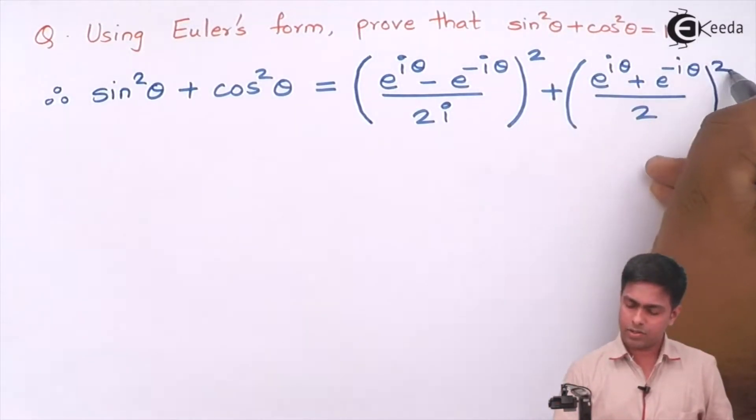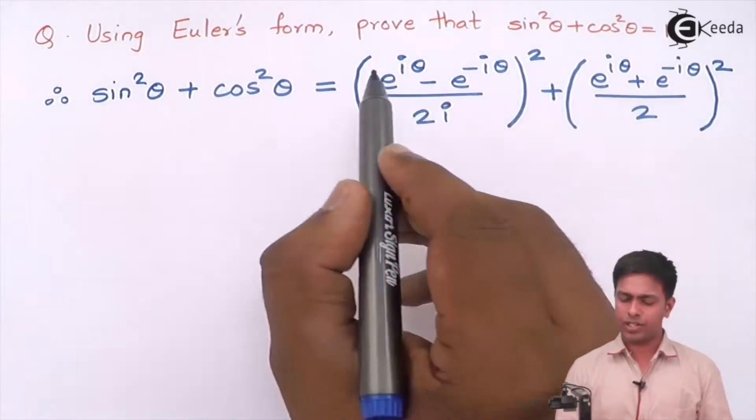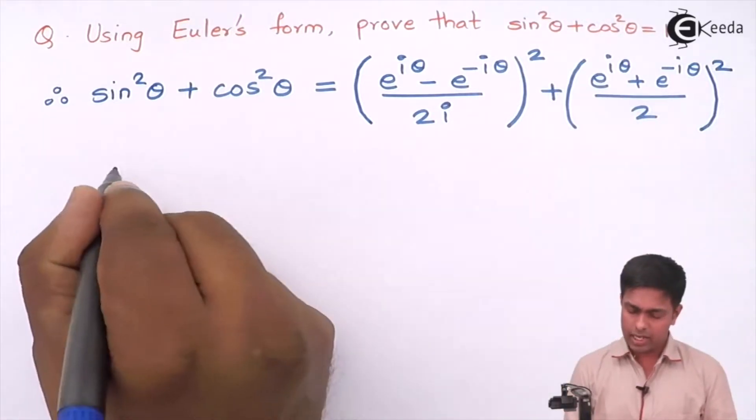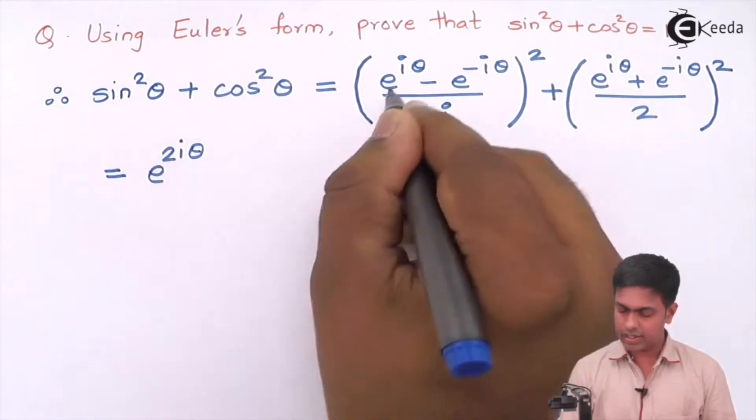Now let's expand these terms by using the formula a minus b the whole square and here a plus b the whole square. So that will become e raised to 2i theta, that is a square.